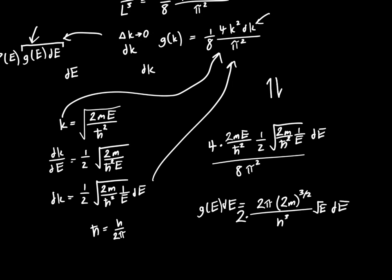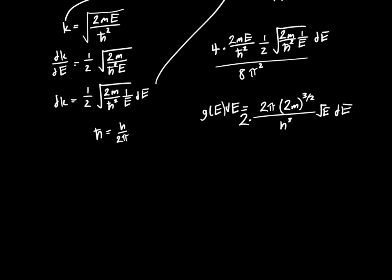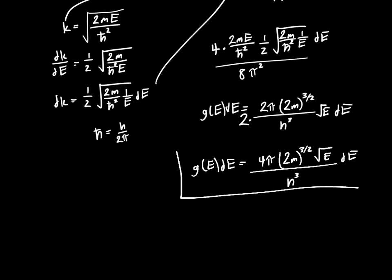And we will get the correct result, which is that g of e times dE is just 4 pi times 2m to the 3 halves square root of e dE divided by h-cubed. And m is the mass of the electron. h is Planck's constant. e is the energy of the electron. And that's our answer.